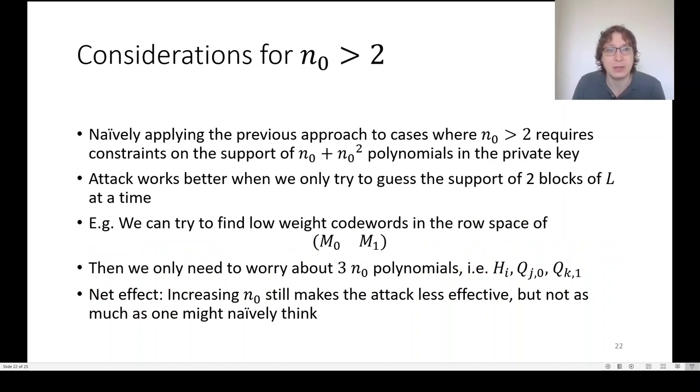Now I'll talk a bit about what you do when n0 is not two. Naively, you might think this makes the attack much less effective because, while the number of blocks in h only increases linearly, the number of blocks in q increases quadratically. However, instead of attacking the whole public key and private key, we can simply look at the first two blocks of each. And when we do that, we're only guessing linearly more polynomials. There's only linearly many more non-zero bits that need to fall inside the information set.